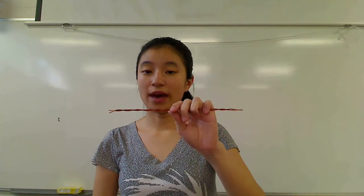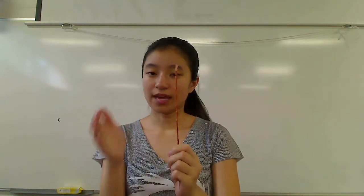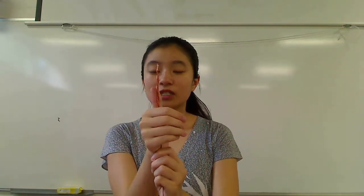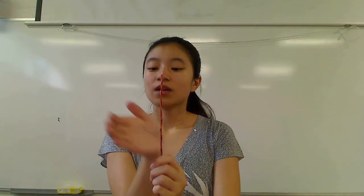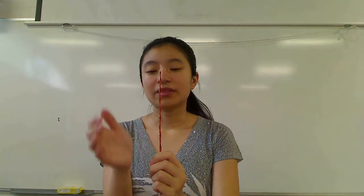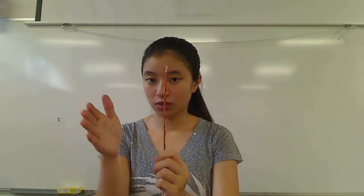Let's say this is a current carrying wire, and in it there is a current going up. How do you find the magnetic field towards the left of the wire? We'll use the right-hand rule. Point your thumb in the direction of the current, and then curl your fingers around the wire. To the left of the wire, my fingers should point towards you, which means that the magnetic field towards the left of the wire points out of the screen and towards you.